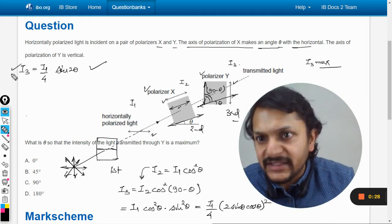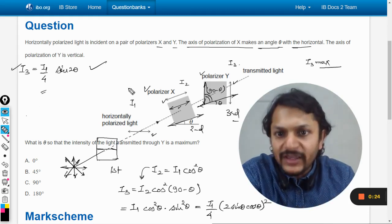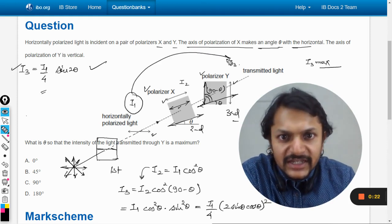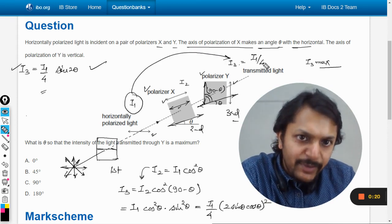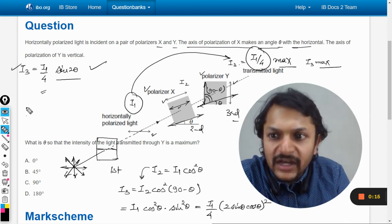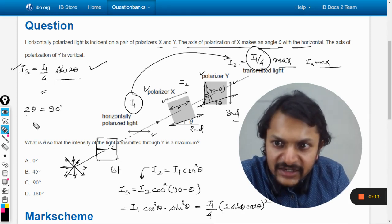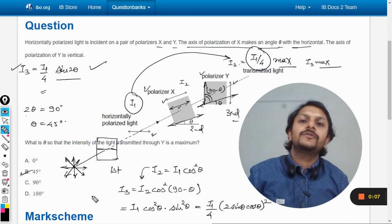Now we want to maximize this thing. So this becomes the amplitude. The amplitude will be i1 by 4. So i1 is this intensity. So this intensity will become i1 by 4. Like this is the maximum value. And when do we get it maximum? When sin 2 theta is 1, which means 2 theta is 90 degrees, which means theta is 45 degrees. Hence the answer will be B.